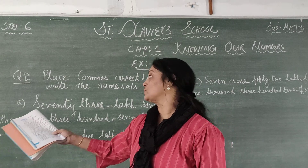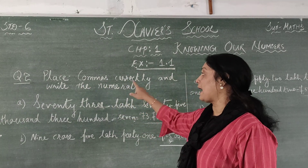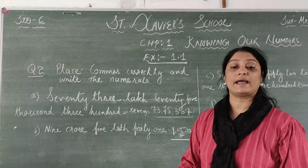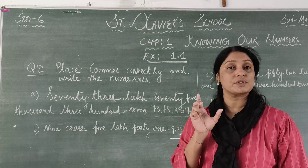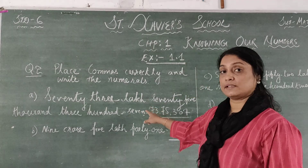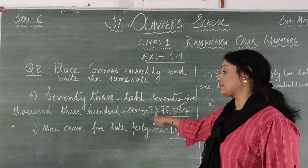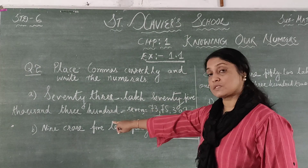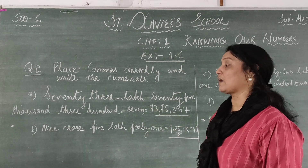Now children, question number 2: Place commas correctly and write the numerals. Words are given and you have to write them in numerals and also place the commas. In my introduction video I have already explained how to put commas. Let's see Part A: 73 lakh 75,307. This is how you write down the answer.